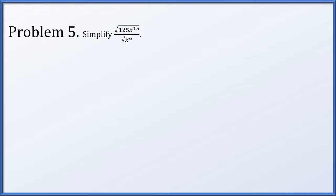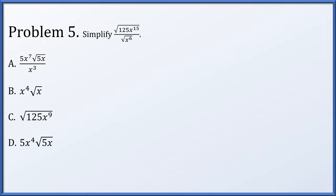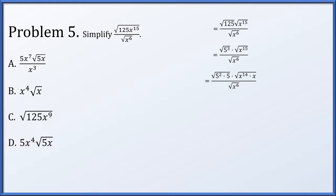In problem 5, we're asked to simplify the square root of 125x to the 15th divided by the square root of x to the 6th, given four options. First I'm going to split the numerator into two radicals to deal with variables and constants separately. 125 is 5 cubed. For every term, we find the largest even power we can factor out: out of 5 cubed I can factor out 5 squared leaving behind a 5, and out of x to the 15th I can factor out x to the 14th leaving behind an x. We factor out even powers to exploit properties of exponents.